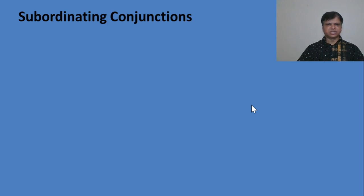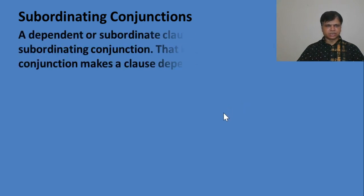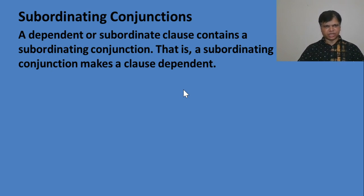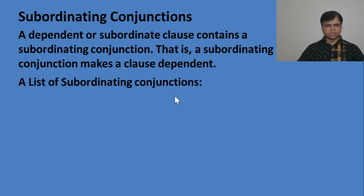Now, subordinating connections are important things for learning clauses. Before going to learn about complex and compound sentences, we have to learn subordinating connections as well as coordinating connections. So what is a subordinating connection? A dependent or subordinate clause contains a subordinating connection. That is, a subordinating connection makes a clause dependent. The clause which contains a subordinating connection is called a dependent clause.